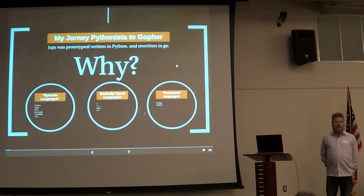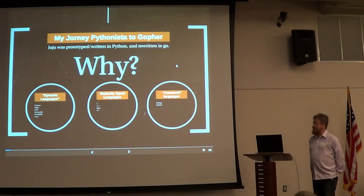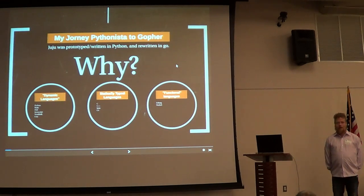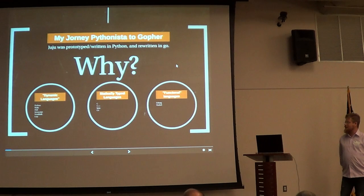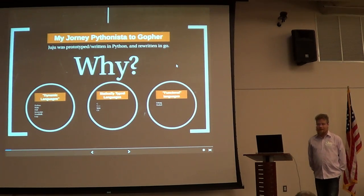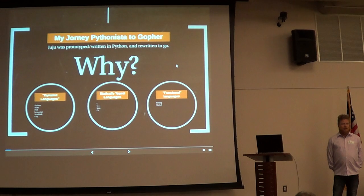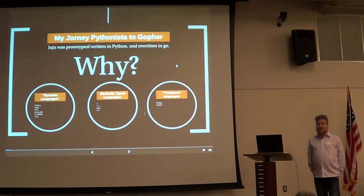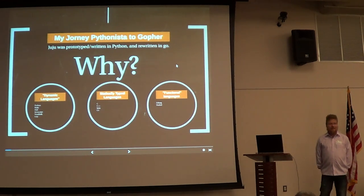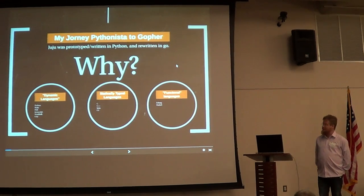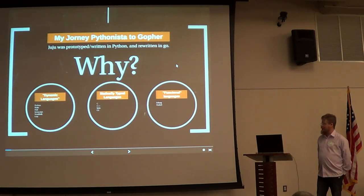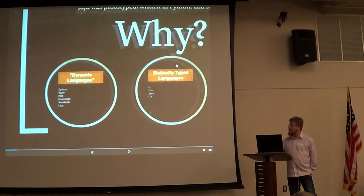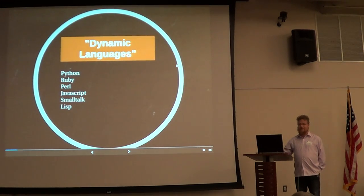I'm going to answer this question through the lens of what happened at Canonical. We wrote Juju originally — it was prototyped in Python and then rewritten in Go. So I'm going to talk through the thinking behind that decision rather than abstractly answer this. Please ask questions; I want this to be interactive.